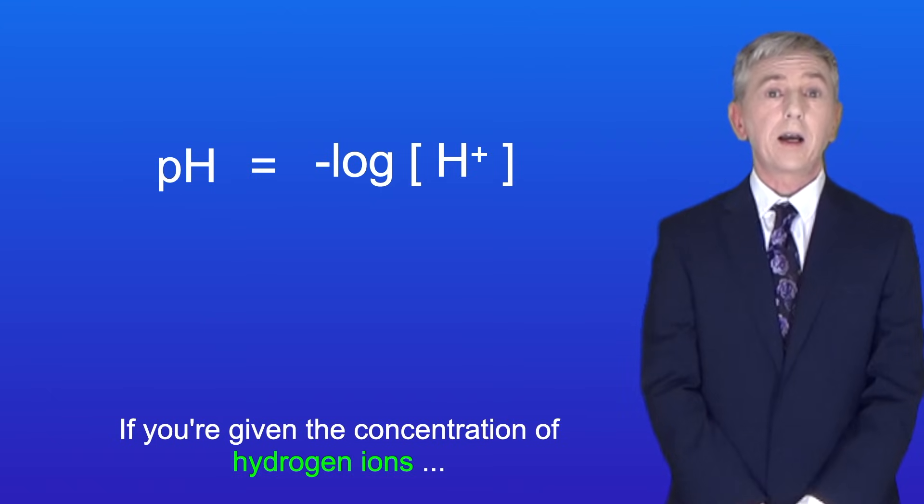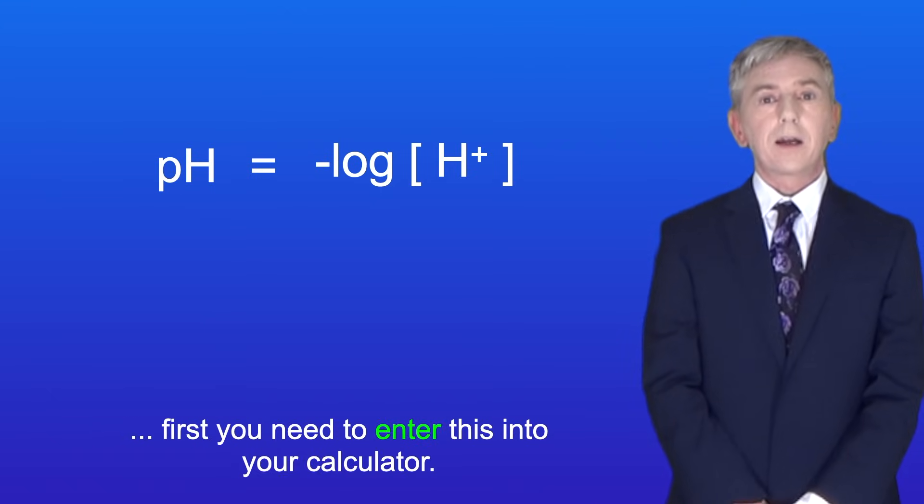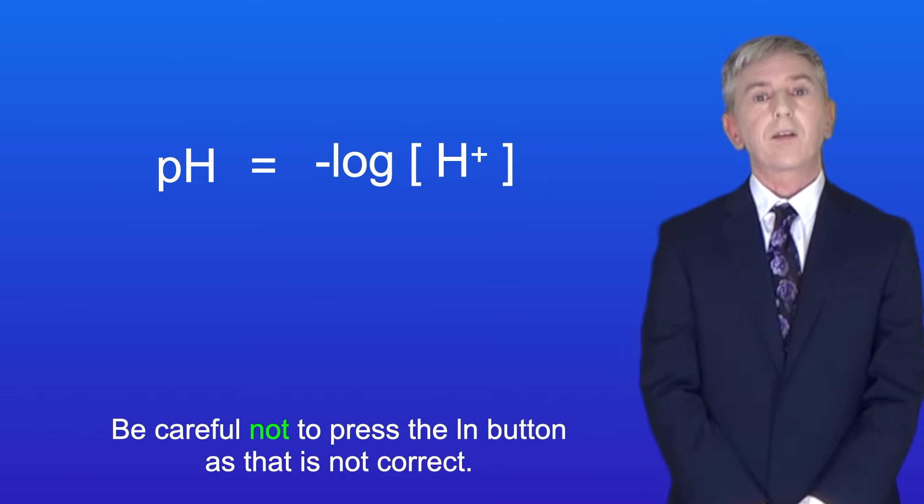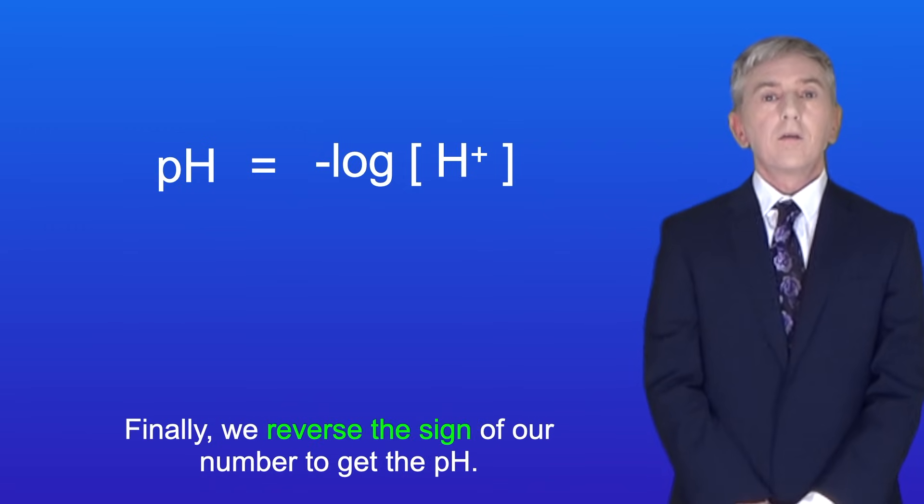Now this looks much more tricky than it actually is. If you're given the concentration of hydrogen ions, first you need to enter this into your calculator. Then press the log button. Be careful not to press the ln button, as that's not correct. Finally, we reverse the sign of our number to get the pH.